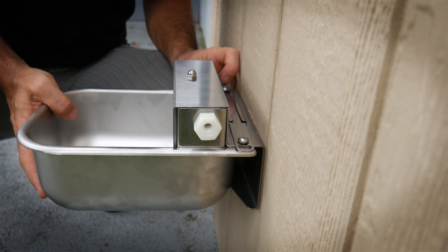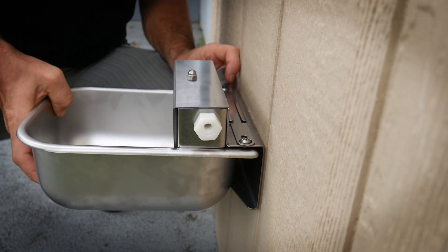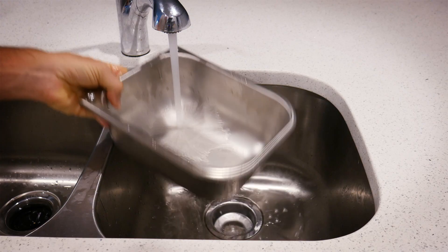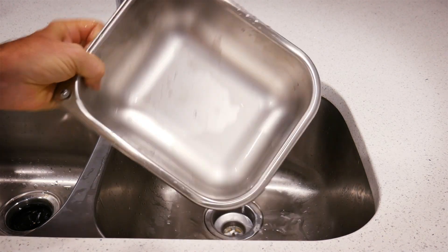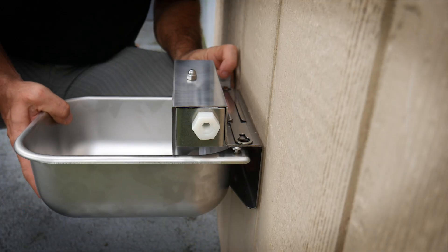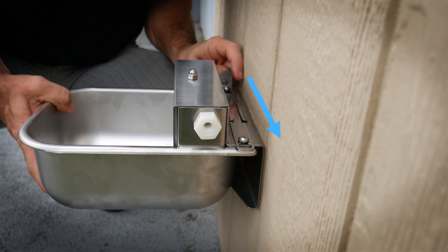To clean the bowl, just slide the latch bar out and move the drinking bowl downwards. After cleaning, lift the bowl upwards onto the wall bracket and use the latch bar to lock it.